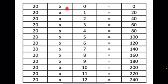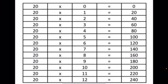20 zeros are 0. 20 ones are 20. 20 twos are 40. 20 threes are 60. 20 fours are 80. 20 fives are 100. 20 sixes are 120. 20 sevens are 140. 20 eights are 160. 20 nines are 180. 20 tens are 200. 20 elevens are 220. 20 twelves are 240.